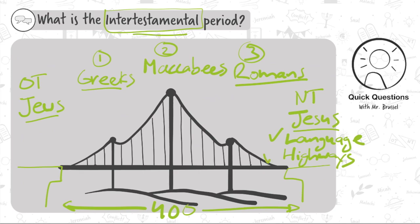Let's quickly recap. The intertestamental period is between the Old Testament, where God worked through the Jews, and the New Testament, where God worked mainly through Jesus. There are three sections of those 400 years: the Greeks, who disrespected the Jews but taught everyone the same language; the Maccabees, a Jewish group that fought the Greeks and established a small Jewish nation for a couple hundred years; and the Romans, who built fast highways shortly before Jesus was born. So when Jesus came, there was one language and fast highways to bring his message to the whole world.